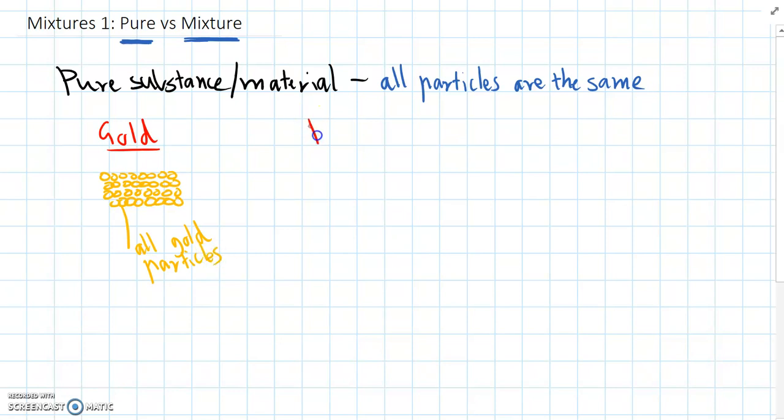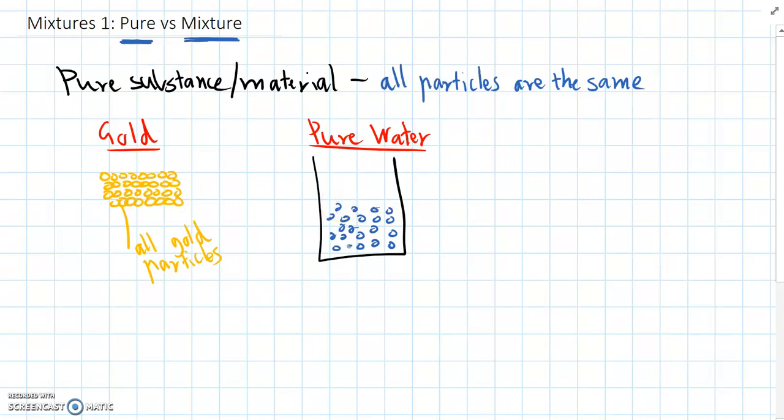Another example would be pure water, which is a liquid. If we have some pure water in a container, the particles are spread out a little bit further than in the gold. But because it's a pure substance, all those particles are the same—they're all water particles.